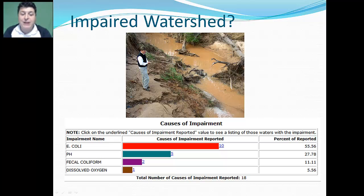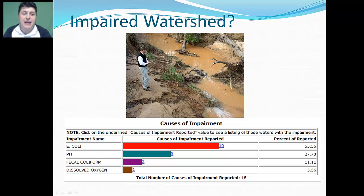When we evaluate these watersheds, we can decide what is causing their major impairment. Is it a biological impairment, like the presence of fecal coliform bacteria or E. coli bacteria? Or is it a chemical impairment, like the presence of something altering the pH or how much dissolved oxygen is present?